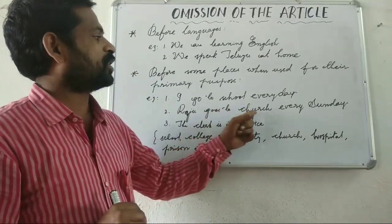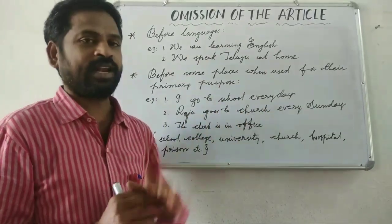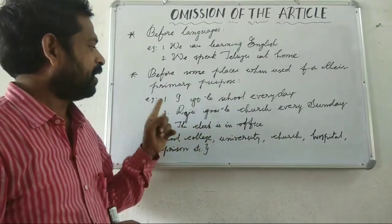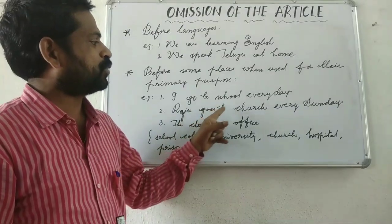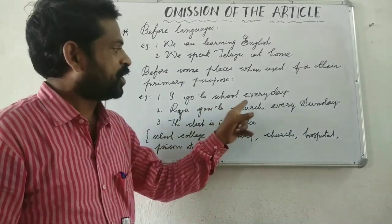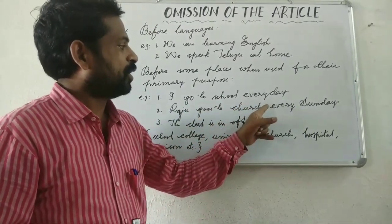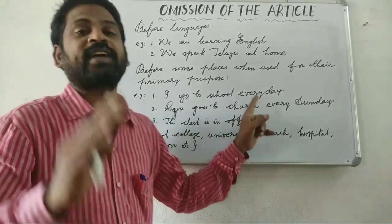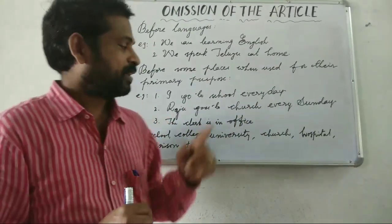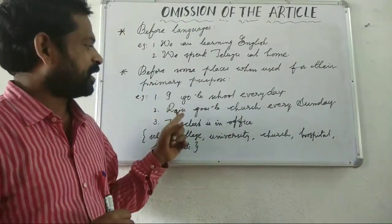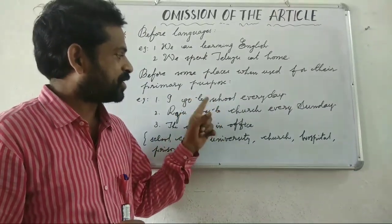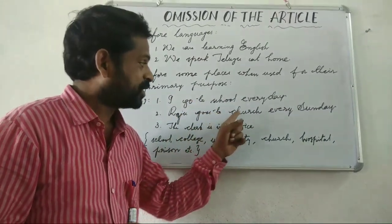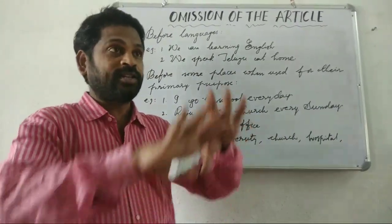'Raju goes to church every Sunday' — primary purpose. But for example: 'The engineer came to the church to check its condition.' Here the engineer is not going to the church for worship — the primary purpose — but for inspection, so we use 'the church.'